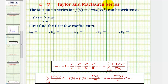One way to find the Maclaurin series would be to use this formula here, where we have the summation from n equals zero to infinity of the nth derivative of f evaluated at zero, divided by n factorial times x to the nth. In expanded form, it would look like this. But notice how to find the first derivative, we'd have to apply the chain rule, and then to find higher order derivatives, we'd have to apply the product rule and the chain rule.